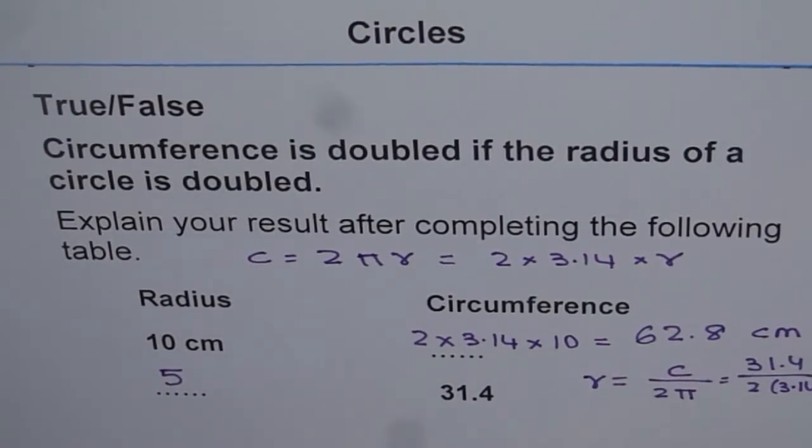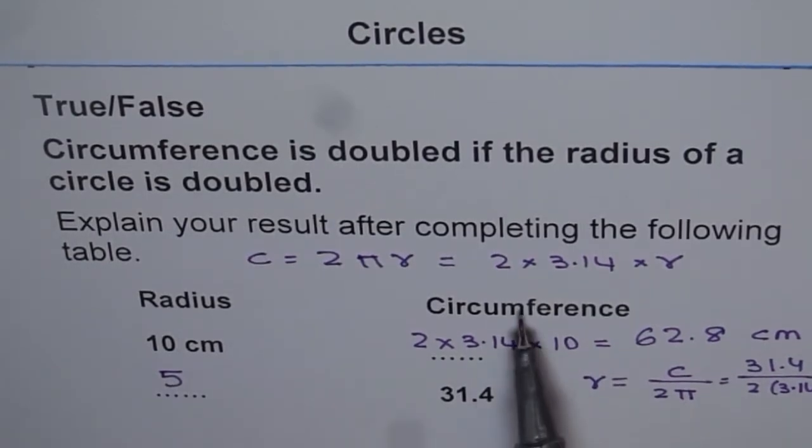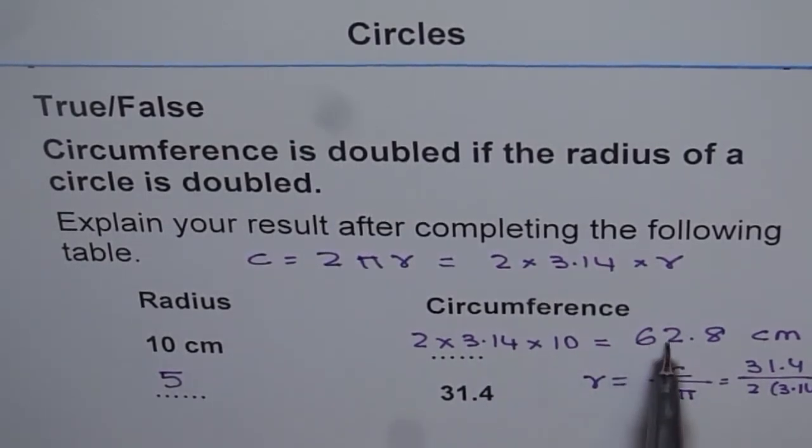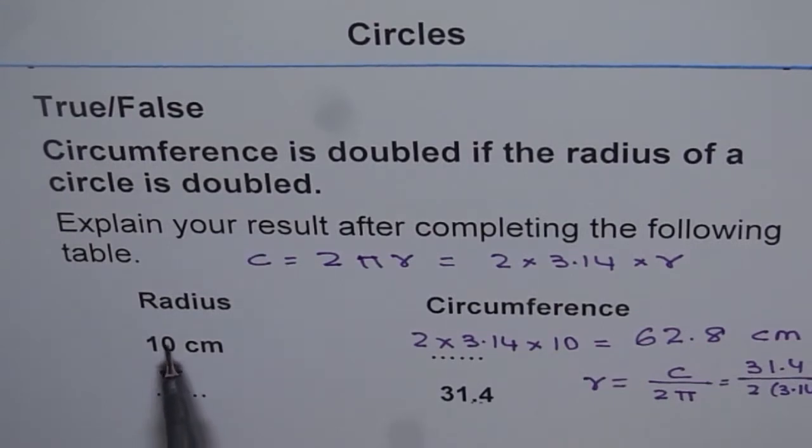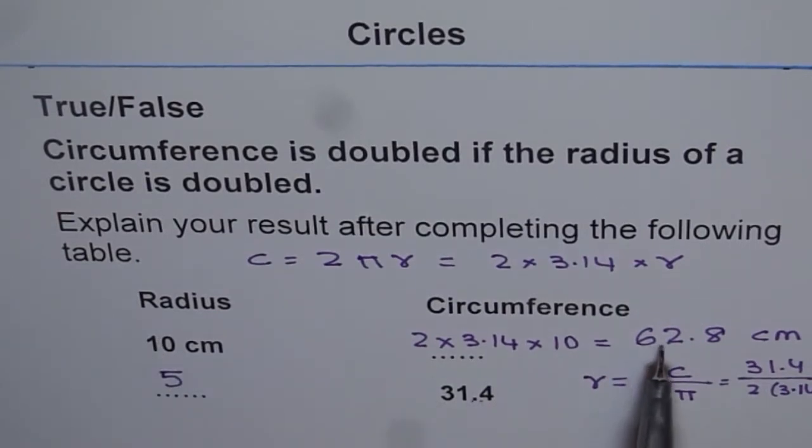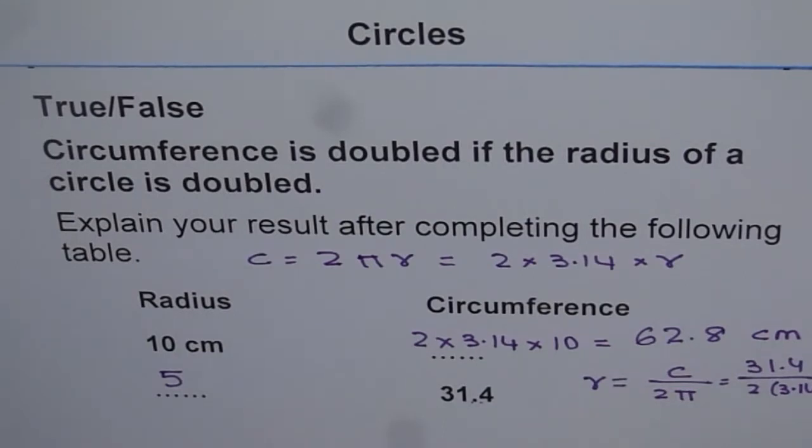Now, you see, circumference is half to 62.4. 31.4 is half of 62.4. And the radius is also half. For 10 and 5, radius is half. So, if you double the radius, circumference doubles. So, that is what you can conclude from the given data. You can make your own data and also find it out.